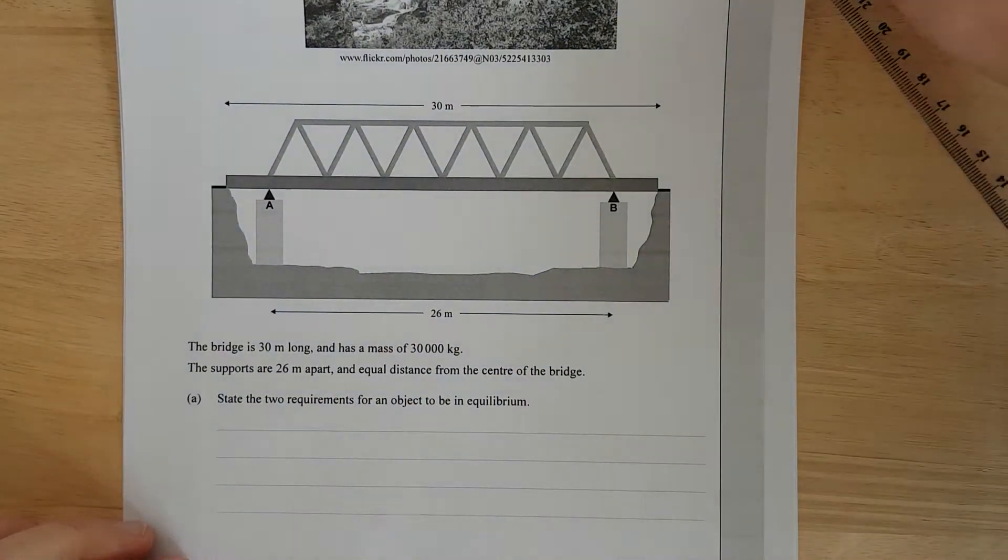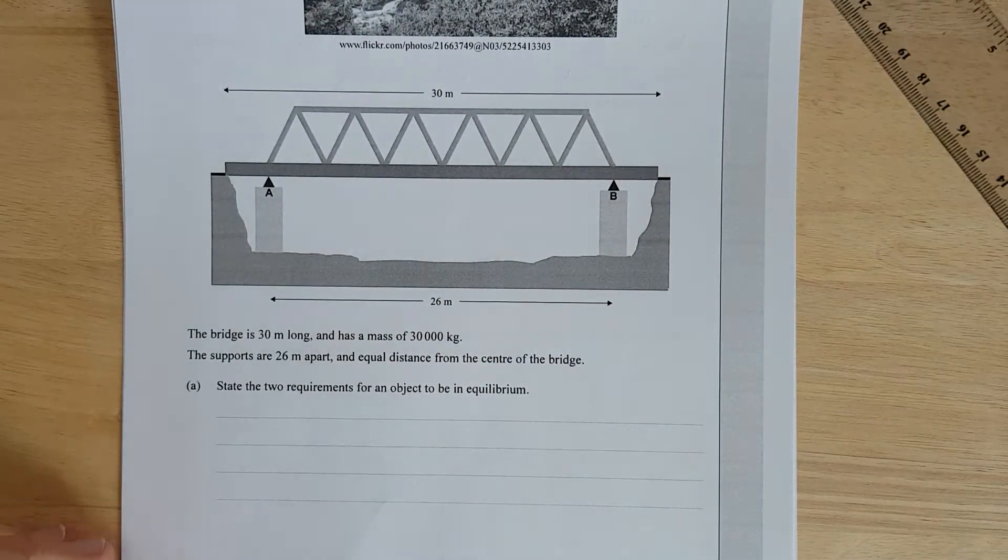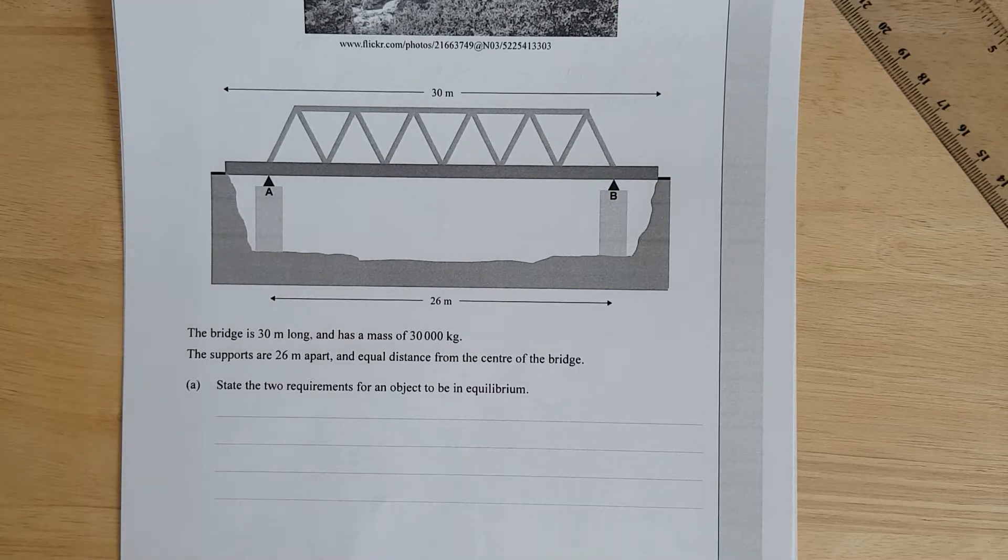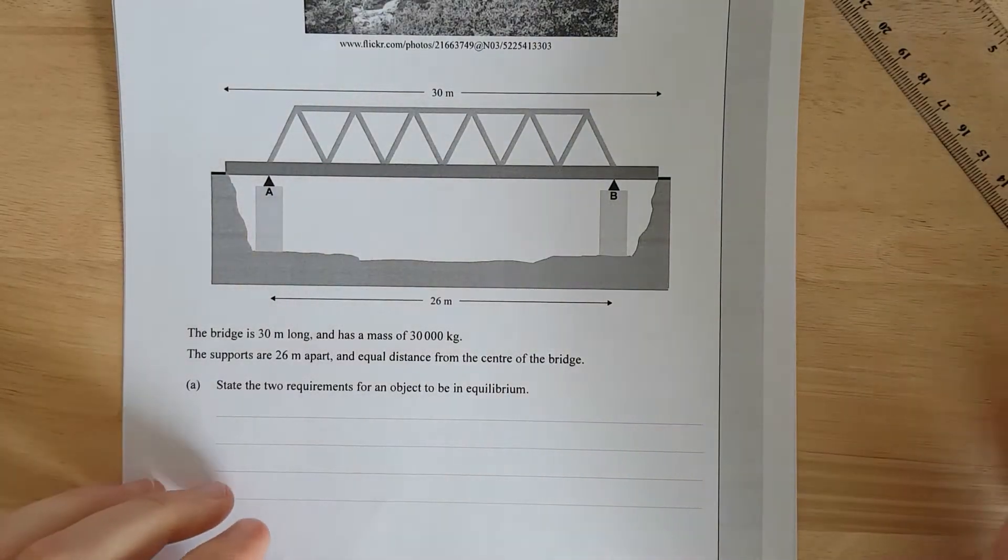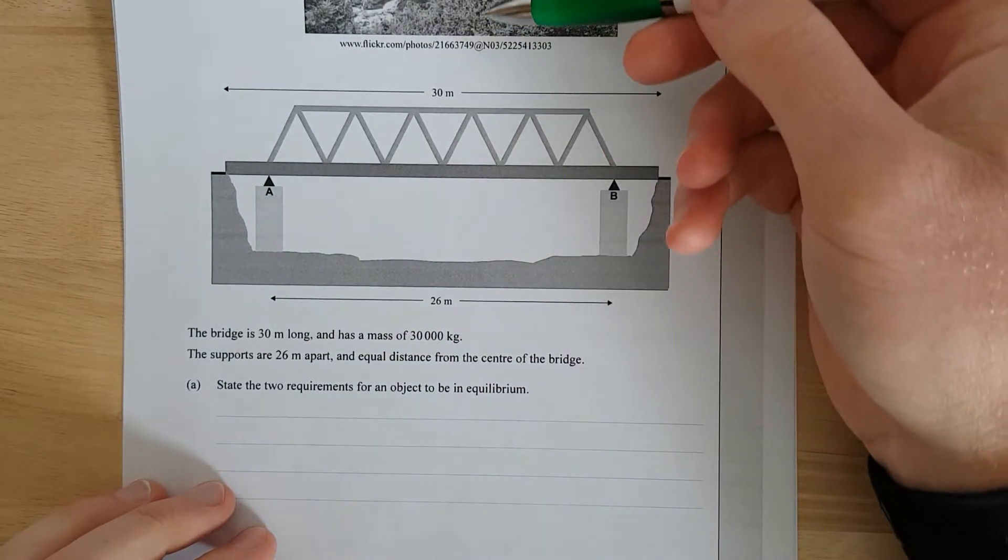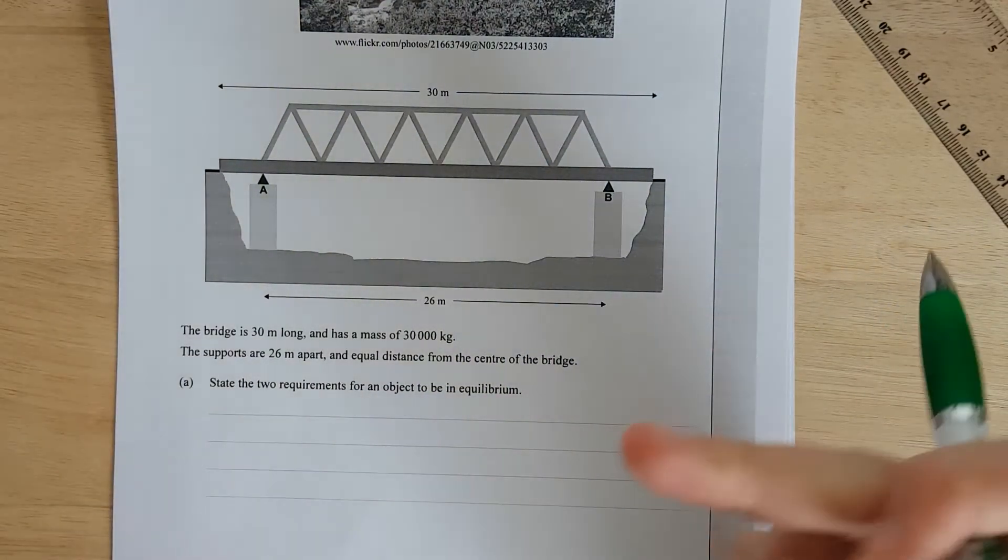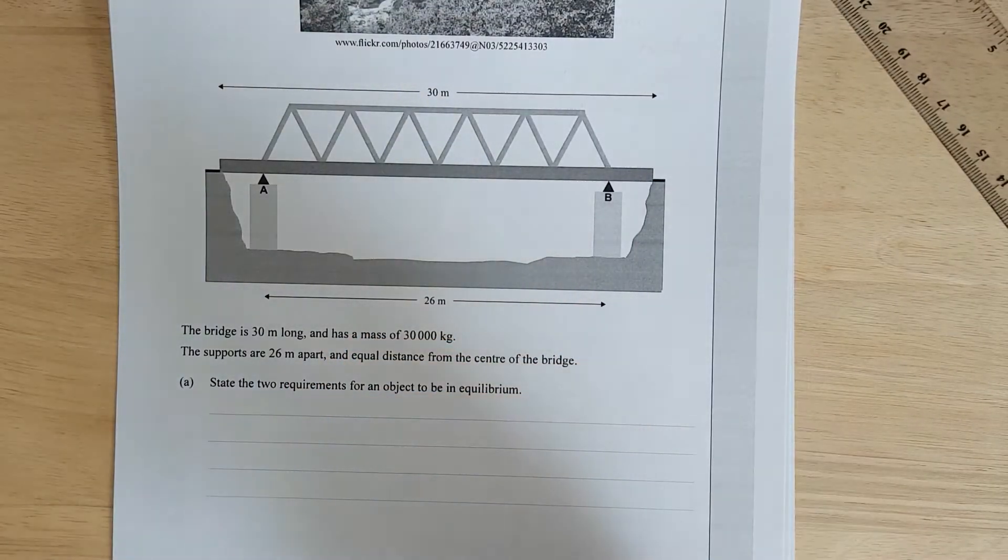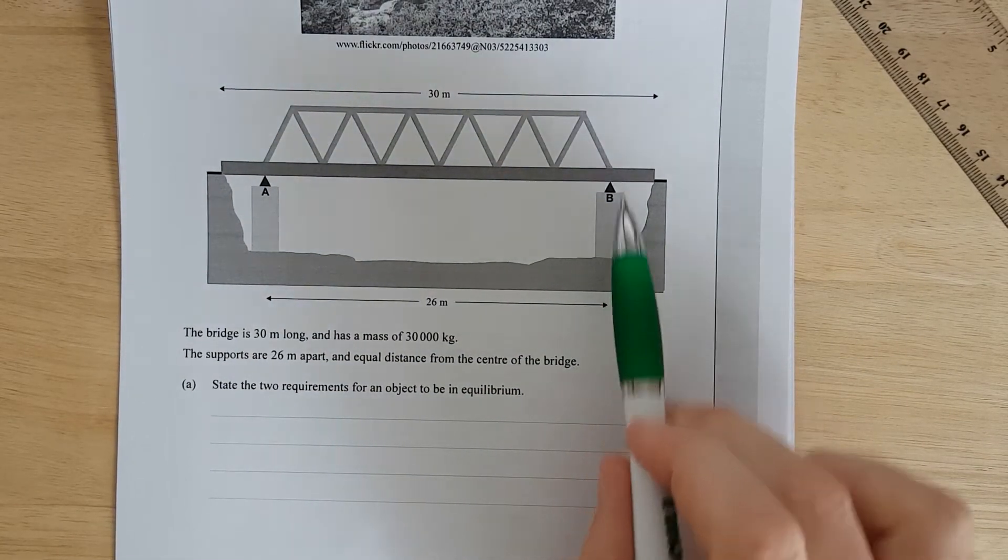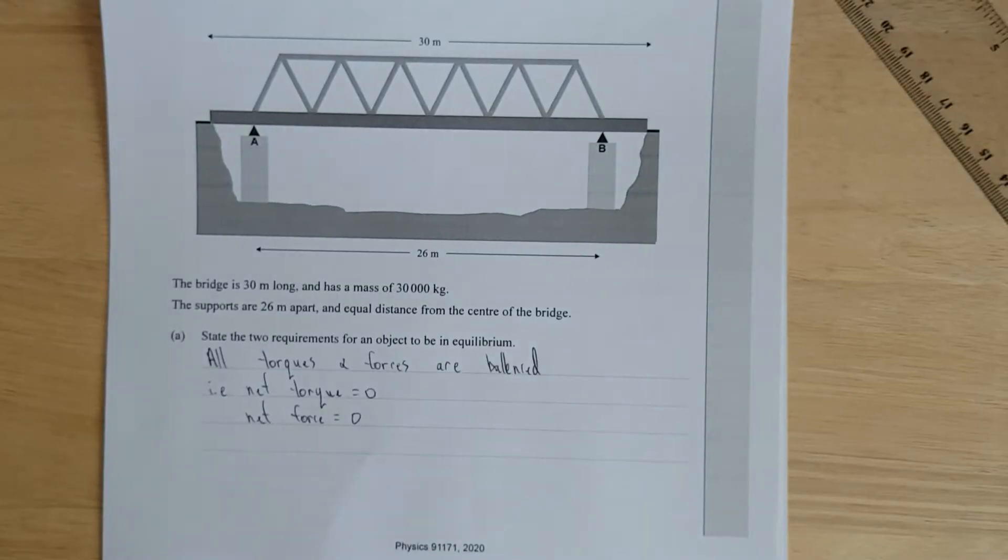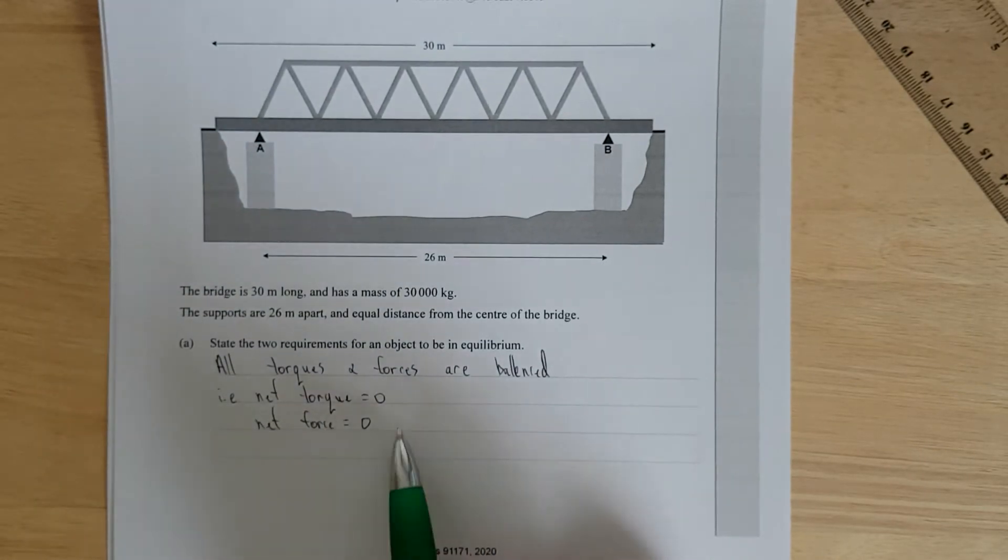State two requirements for an object to be in equilibrium. So the generic answer is the net torques must be balanced or must be equal, and the net forces must be balanced. However, the net forces must be balanced only means the forces in the plane. So all the upward forces need to equal all the downward forces, and all the horizontal forces need to be equal to the other horizontal forces.